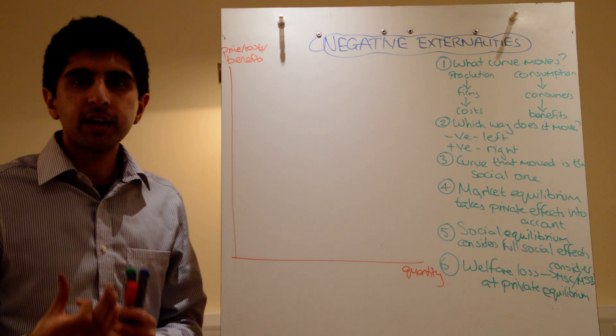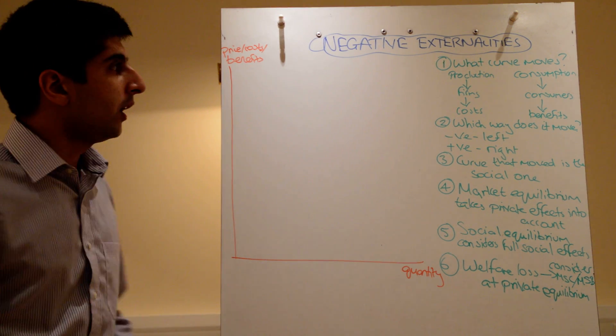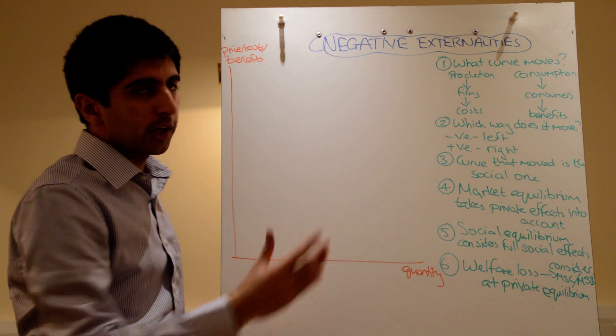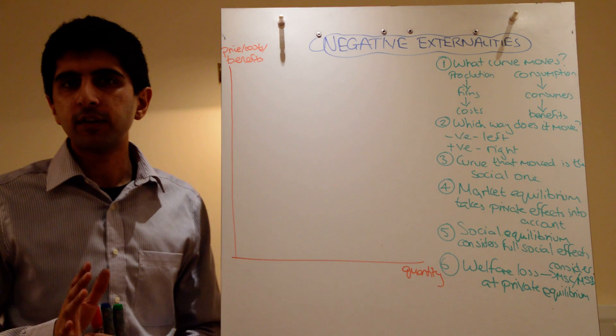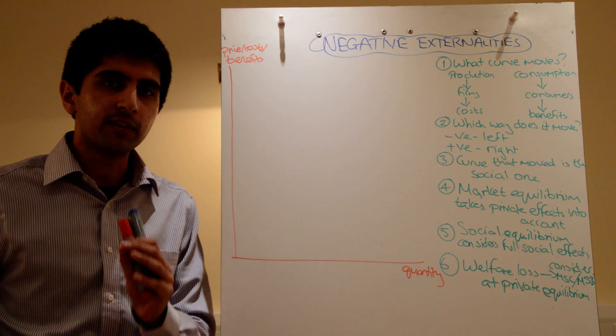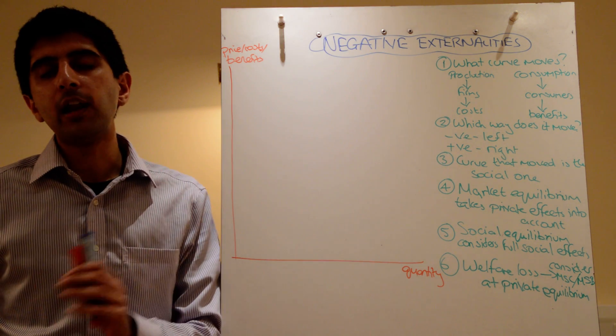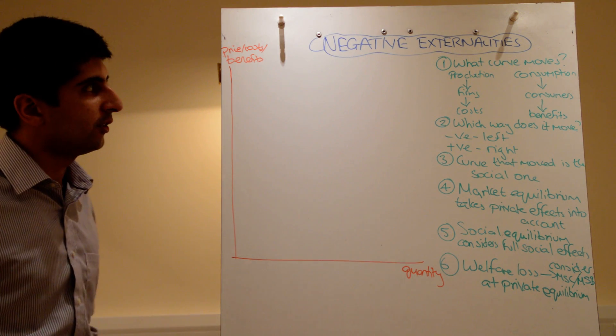Okay, let's now look at market failure. One of the key reasons why markets fail is when there are externalities present. In this video we're going to look at negative externalities. But what is market failure? Market failure is very simply when the free market fails to allocate resources at the socially optimum level. And this leads to a net loss in social welfare.